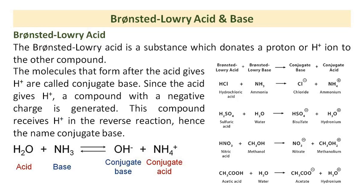The Bronsted-Lowry Acid is a substance which donates a proton or H-plus ion to another compound. The molecules that form after the acid gives a proton or H-plus are called the conjugate base. Since the acid gives a proton, a compound with a negative charge is generated. This compound receives the proton in the reverse reaction, hence the name conjugate base.